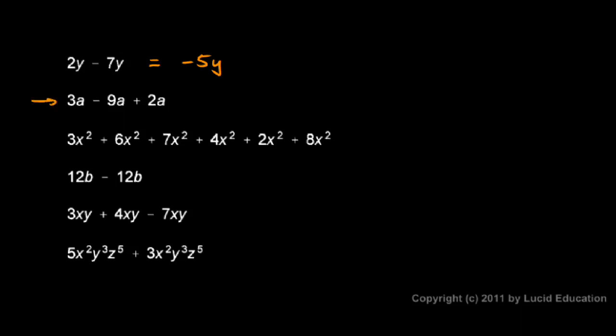And the next one, 3a minus 9a plus 2a. Again, we have to subtract first, and then we'll add the 2. So 3a minus 9a, that gives me negative 6a. And then plus the 2. Negative 6 plus 2 is negative 4. So 3a minus 9a plus 2a gives me negative 4a.